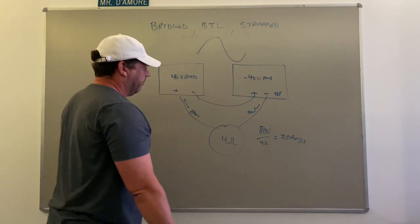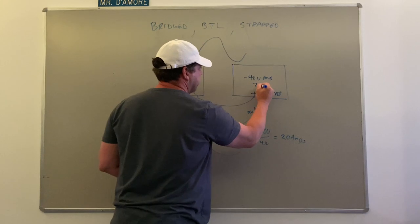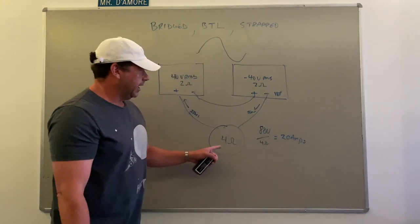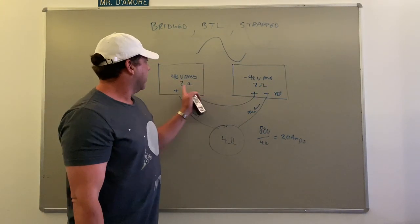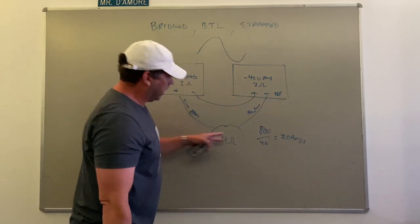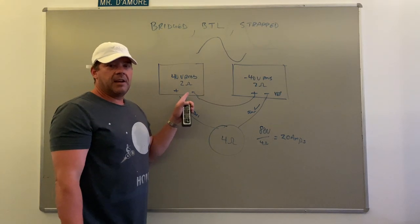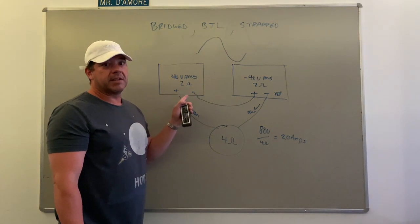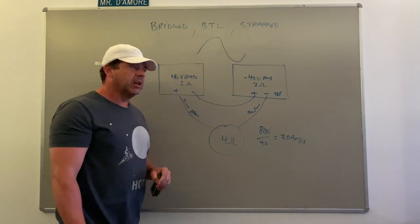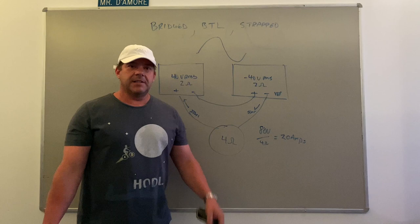Each amplifier we say sees 2 ohms. There's nothing 2 ohms about this, there's nothing 2 ohms anywhere, but just because it's not going to ground, it's going to minus 40, that causes an 80 volt difference. Twice as much current flows, so this amplifier is having to put out as much current as it would have to if it was connected to a 2 ohm load.